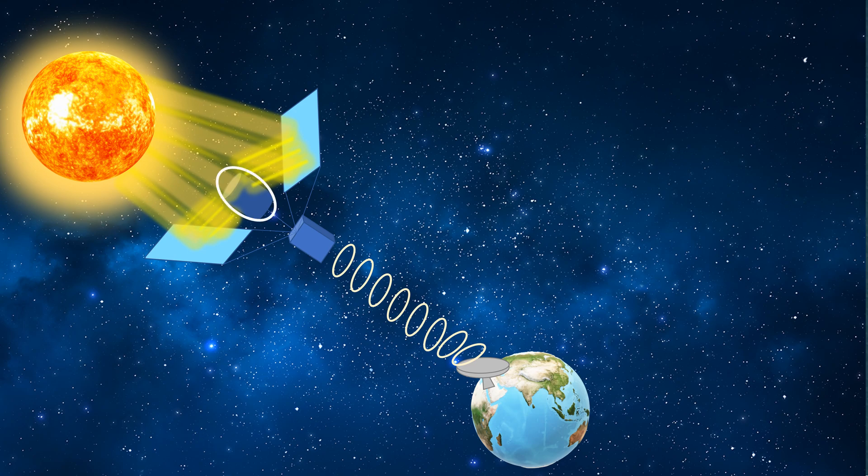This energy is converted either into microwave or laser and then beamed to earth. On earth, power receiving stations collect the beam and add it to the electric grid.